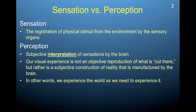Our visual experience is not anything remotely close to an objective reproduction of what is, quote-unquote, out there. Most of us have this idea that we're all seeing the same things when we look at something — that if someone were in our exact spot, they would see things as we would see things. But that's not really the case. What we see is a subjective construction of reality manufactured by our brains, so we actually experience the world as we need to experience it — in a way defined by our own prior experiences.